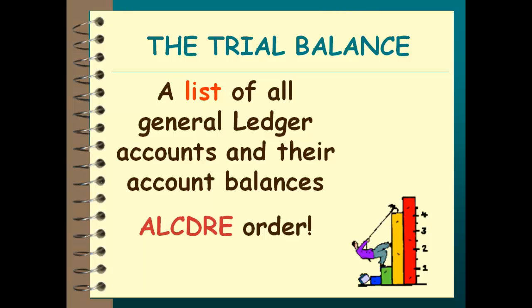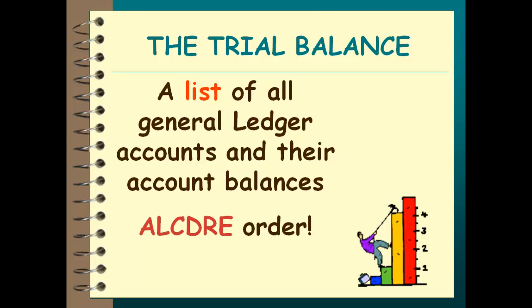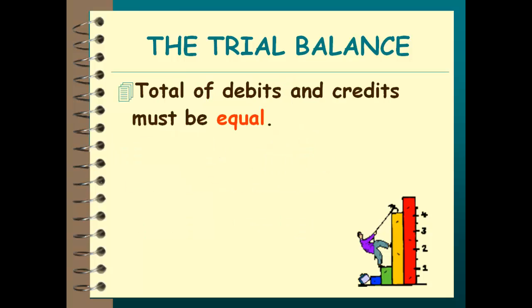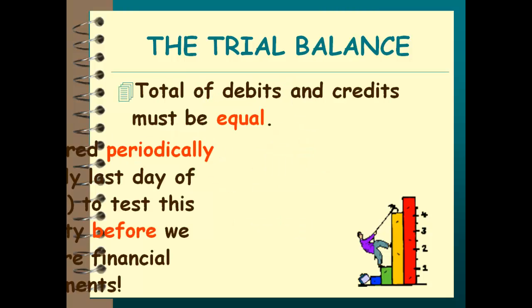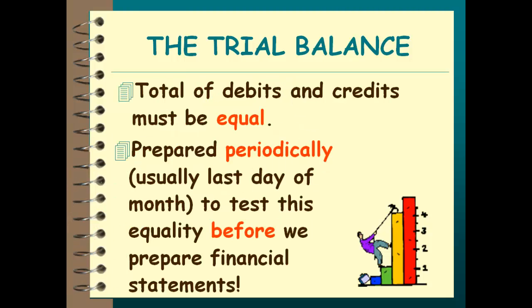The trial balance is simply a list of all of our accounts from the general ledger and their balances. We add up our debits, we add up our credits, and hopefully we find that those two are equal. With the trial balance, we are trying to make sure that debits and credits equal.